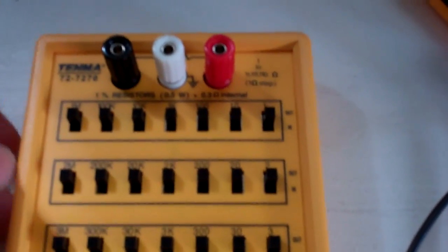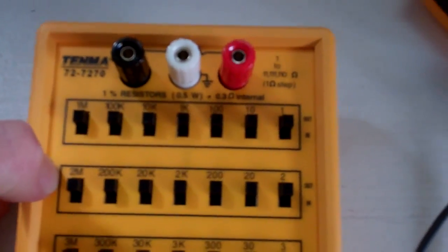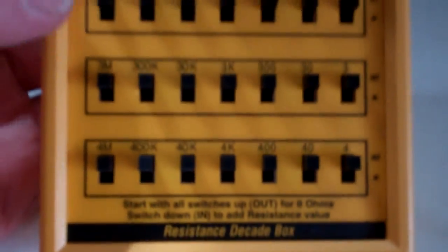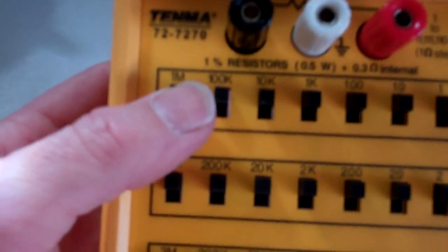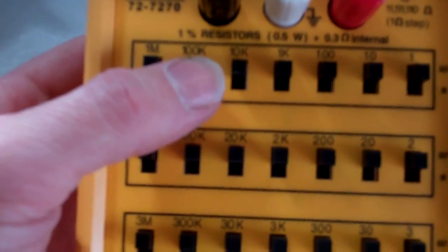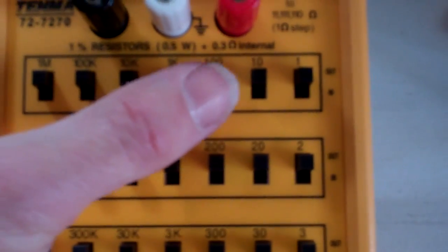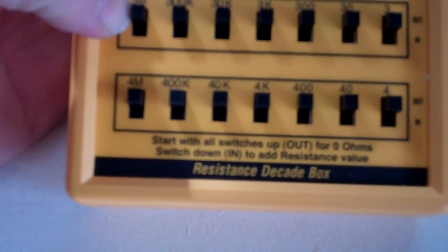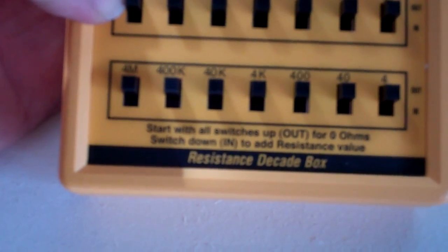All right, that's my new resistance decade box. It's got 1 megohm, 100k, 10k, 1k, 100 ohms, 10 ohms, 1 ohm, and then you've got 2 megohms all the way down.